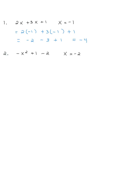Same idea for problem 2. I put negative 2 in place of x, and I could simplify the plus 1 minus 2 at the end. But first, I square negative 2 and get 4. And really, this is minus 4 plus 1 minus 2. So we have negative 4 plus 1 is negative 3, minus 2 is negative 5.